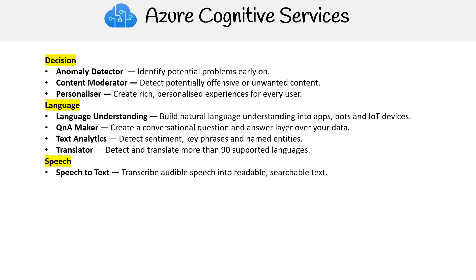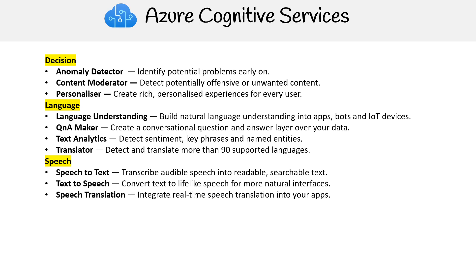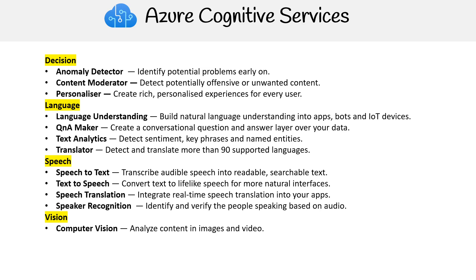For speech, we have Speech to Text — transcribe audible speech into readable, searchable text. Text to Speech — convert text to lifelike speech for natural interfaces. Speech Translation — integrate real-time speech translation into your apps. And Speaker Recognition — identify and verify the people speaking based on audio.